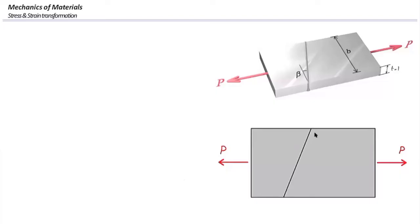In many practical engineering problems we make different components by welding them together, and typically the welding line is going to be the weakest part of the structure. So we need to ensure that stresses developing on that welding line are not going to exceed the maximum allowable stress.